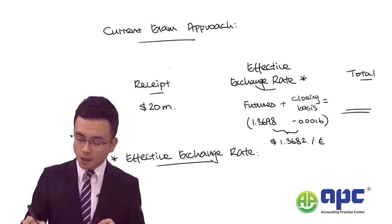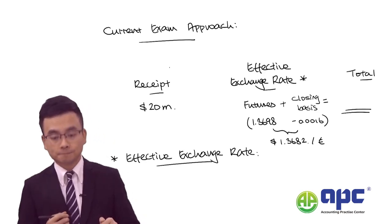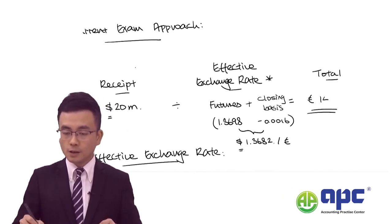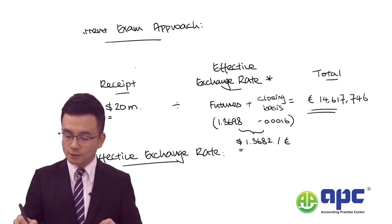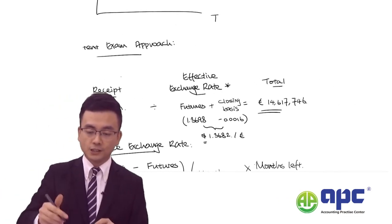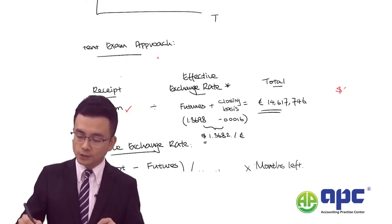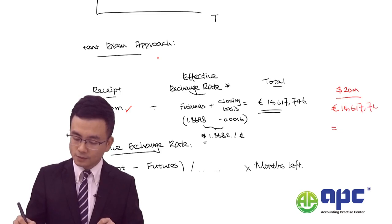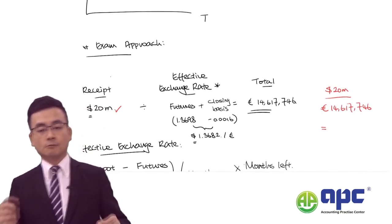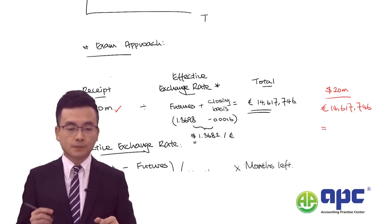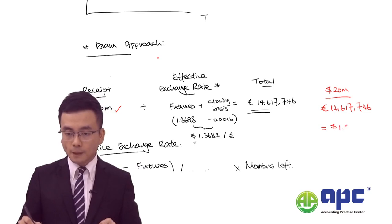So the effective rate is 1.3682 dollars per euro. Since the first currency is the same, we use divide, and we can work out the total euros of 14,617,746. To prove it: you receive $20 million, exchange at 1.3682 per euro, and that gives you 14,617,746 euros. If you use one divided by the other, that effectively gives you 1.3682 per euro.